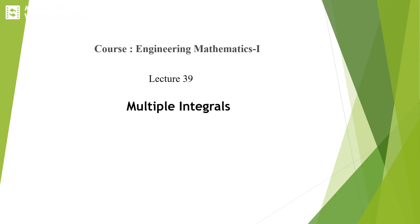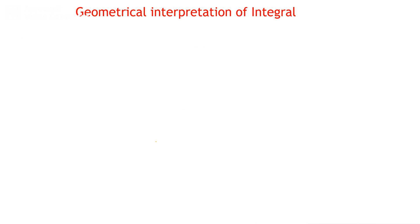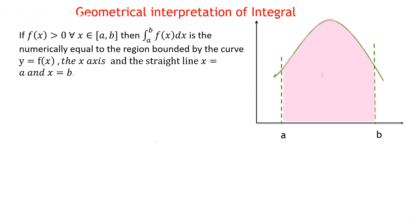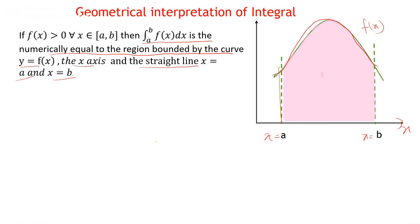Lecture 39: Multiple Integrals. We discuss the geometrical interpretation of the integral. If f(x) is a function on the interval [a, b], then the integration from a to b of f(x) dx equals the numerical value of the region bounded by the curve f(x), the x-axis, and the straight lines x = a and x = b. So the integration from a to b of f(x) dx gives the area of that bounded region ABCD.